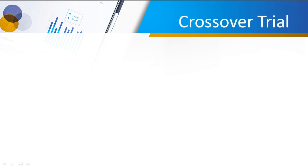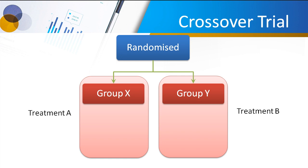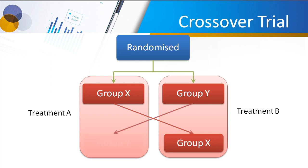A crossover trial is where initially you start out with group X of patients getting treatment A and group Y getting treatment B. And after a period of time, group X crosses over to get treatment B and group Y cross over to get treatment A.